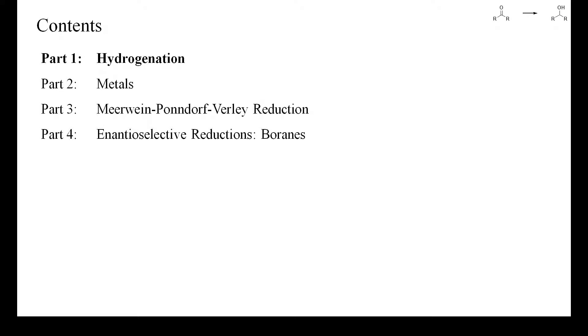Ketones can be reduced easily with hydrides of boron, aluminum or silicon and these reactions will not be discussed here. However, all the reagents presented in the videos about the reduction of carboxylic acids to alcohols can also be used to reduce ketones and aldehydes, often under still milder conditions.